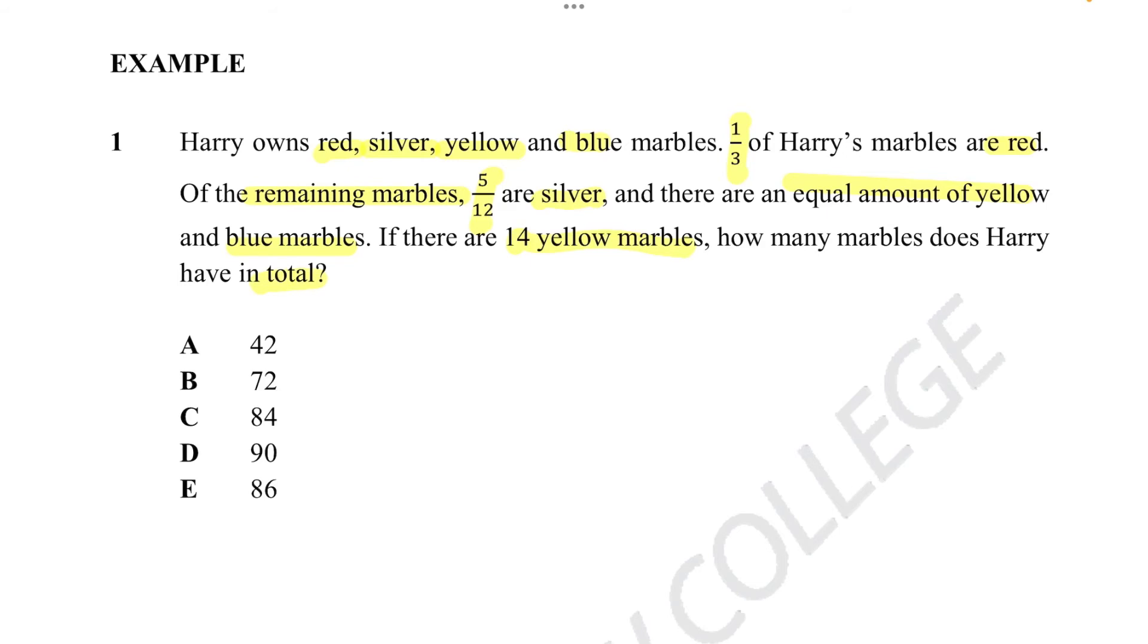So let's start off with red. We know red has one third of the marbles. That means we need to find the remaining marbles from the red. So if red has one third of the marbles, we can assume that 3 out of 3 would be how much Harry has in total, minus one third, which is how much red marbles there are. And we know when we minus fractions, the denominator stays the same, and it becomes 3 minus 1, which is 2. So the remaining marbles will be 2 out of 3.